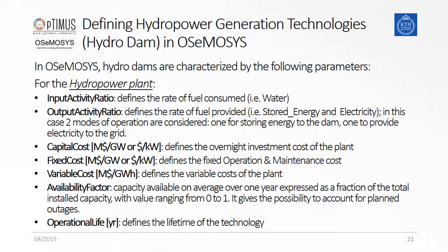To produce electricity in mode of operation two, we set the output activity ratio for electricity to one. As for other technologies, we also need to implement the capital cost, the fixed cost, the variable cost if applicable, the availability factor to account for plant outages, and the operational life to indicate the technical lifetime.